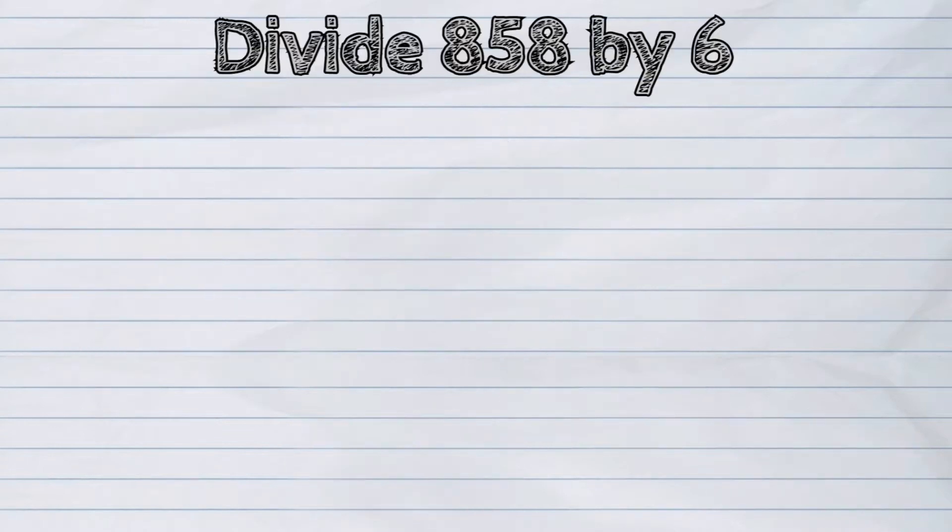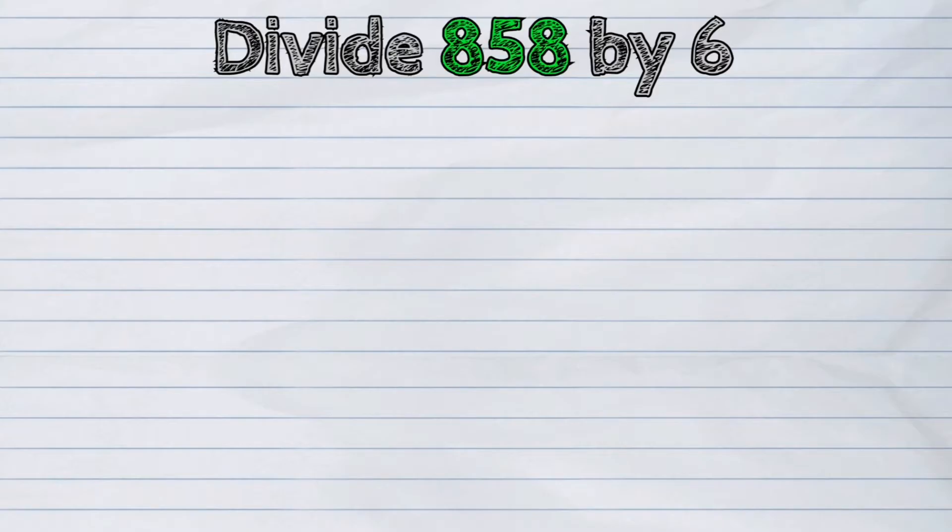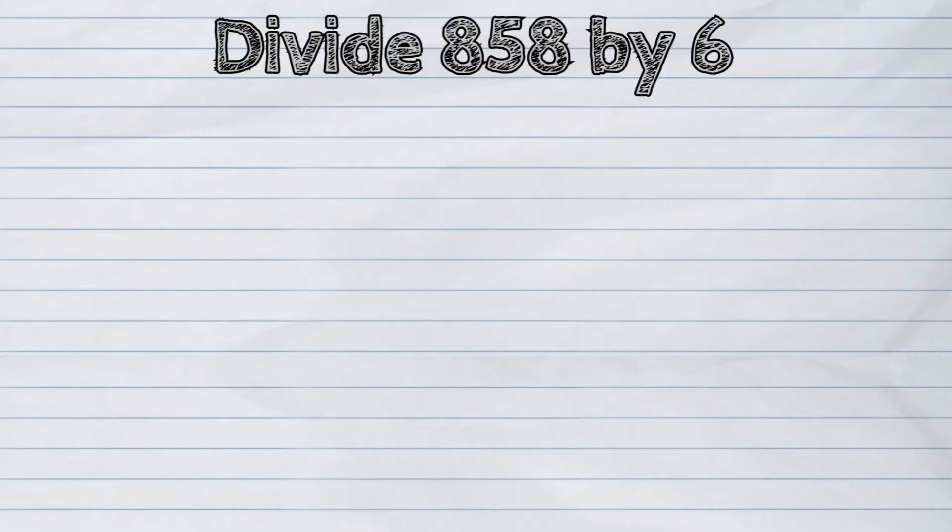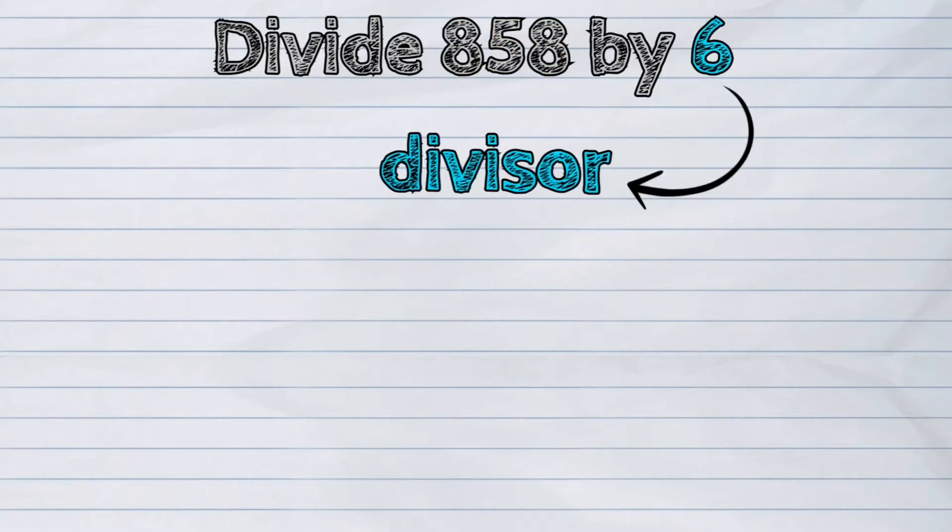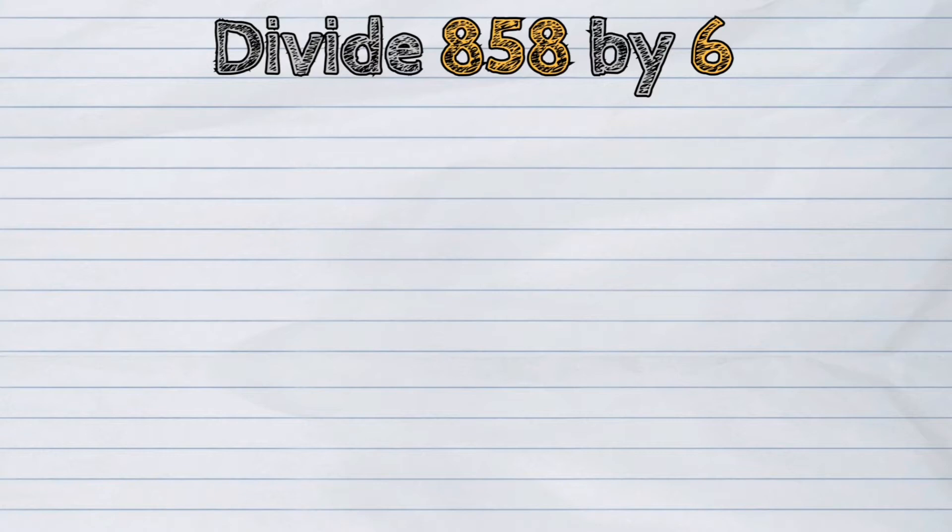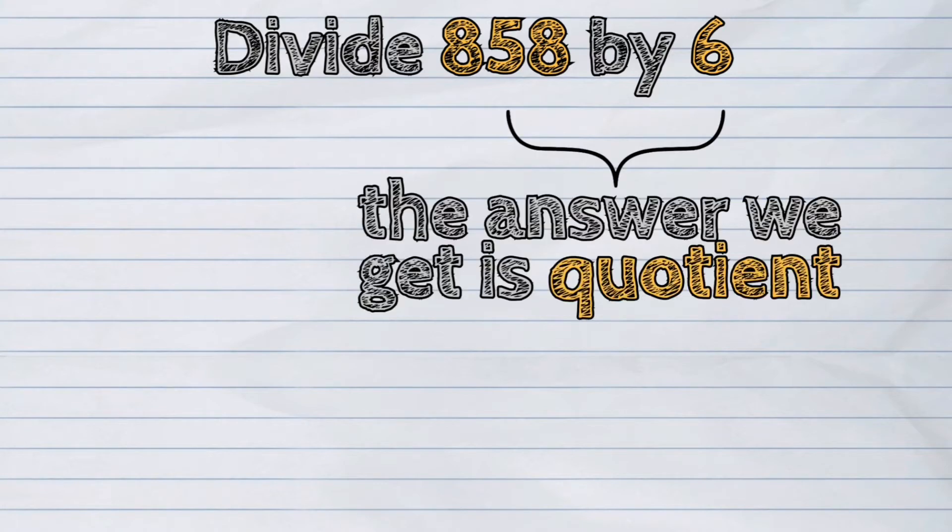Let us study this example. Divide 858 by 6. In this division sentence, 858 is what we call dividend, it is the number to be divided. Digit 6 is the divisor, it is the number that is used to divide. The answer we get from dividing the numbers is what we call quotient.